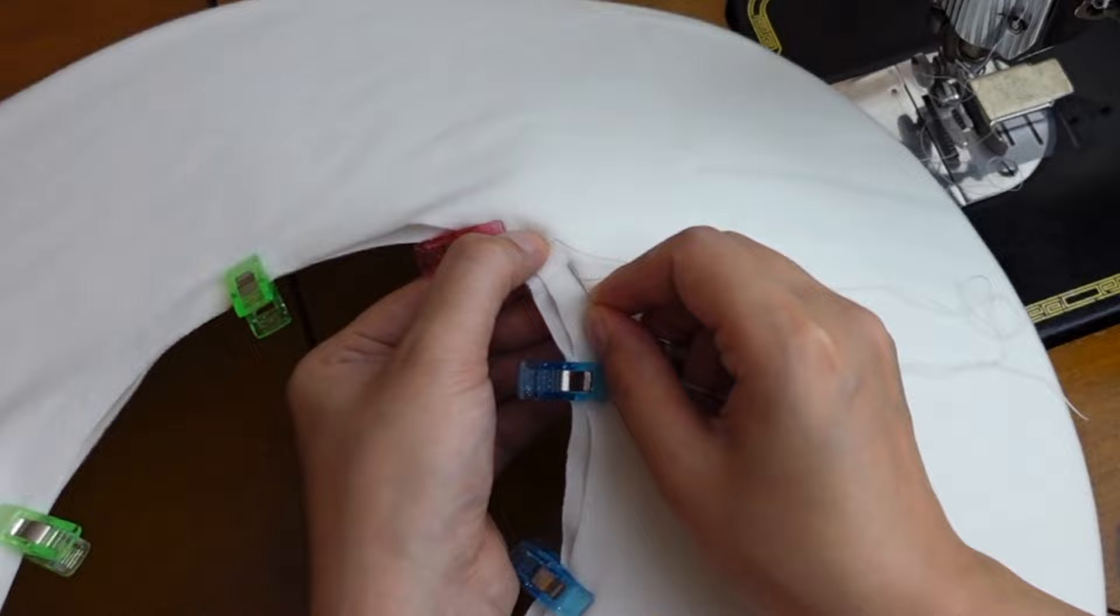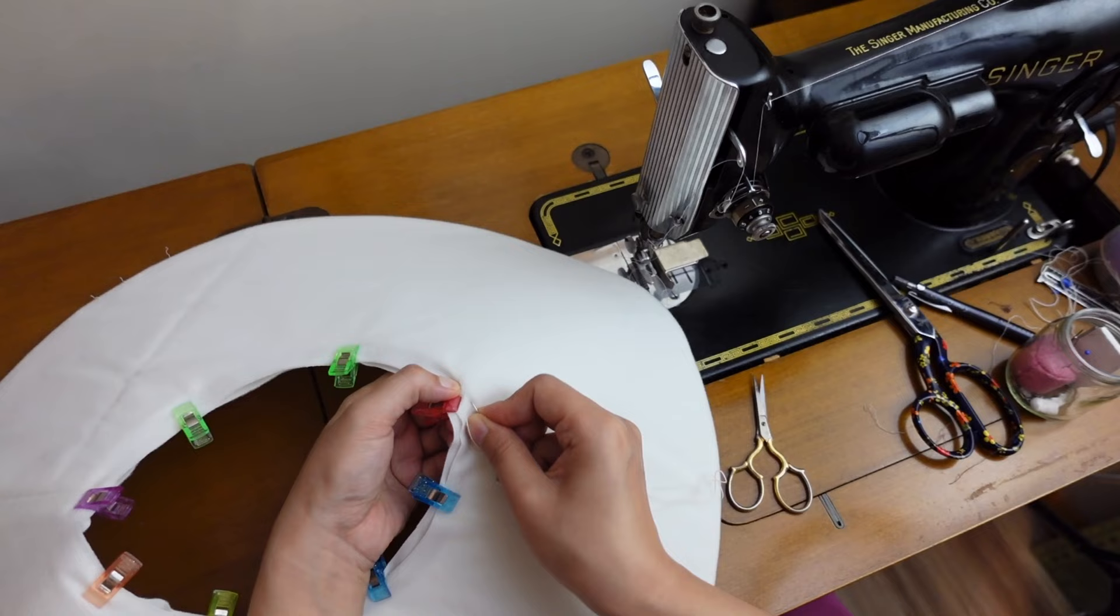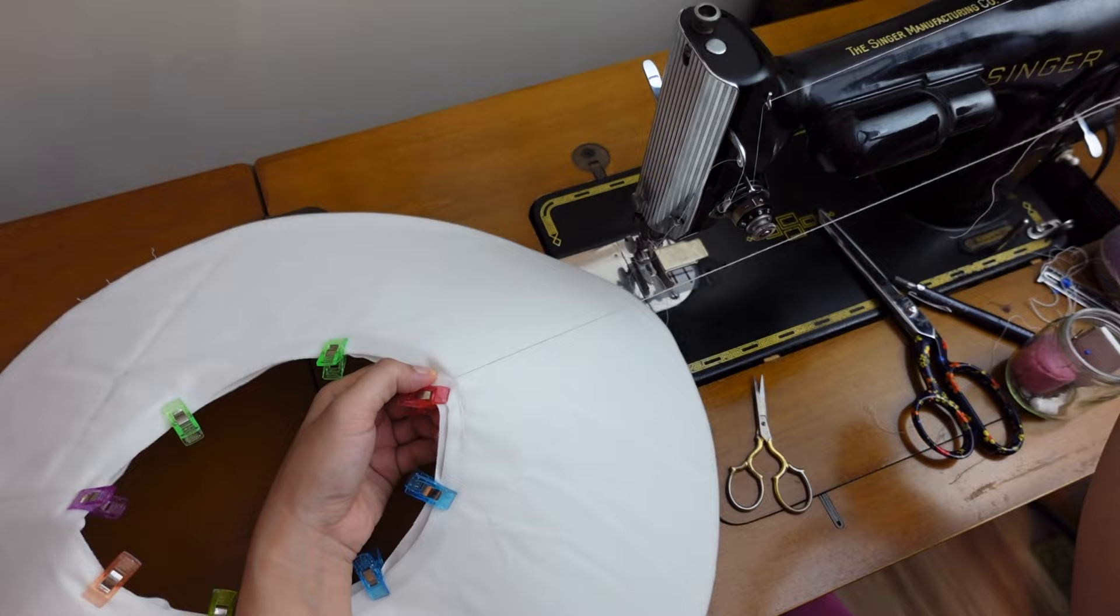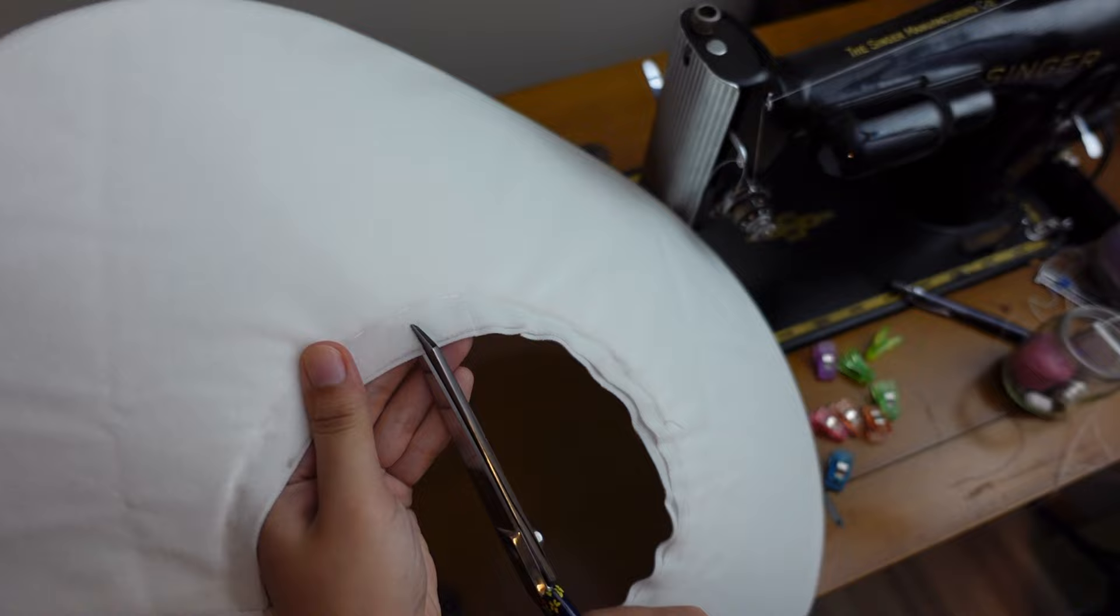I backstitched only in the beginning of the basting stitch. Then I clipped into the seam allowance close to but not through the basting stitch.